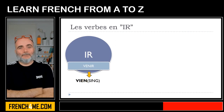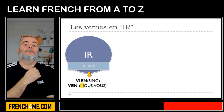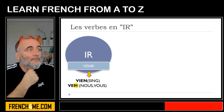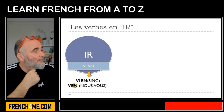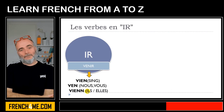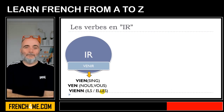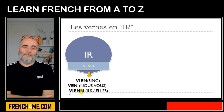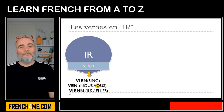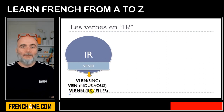Then we will have another root or stem for nous and vous at the plural form, and it will be VEN. So you can see it's not the same as the singular stem. And last but not least, we'll have a third stem for ils/elles at the plural form, and it will be VIEN — but written differently. So you've got three forms: VIEN for the singular, VEN for nous and vous, and VIEN again for ils/elles plural.